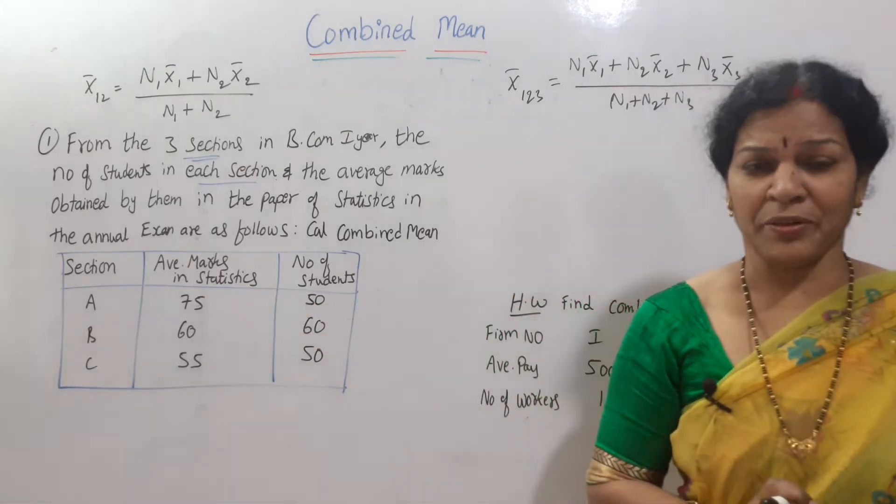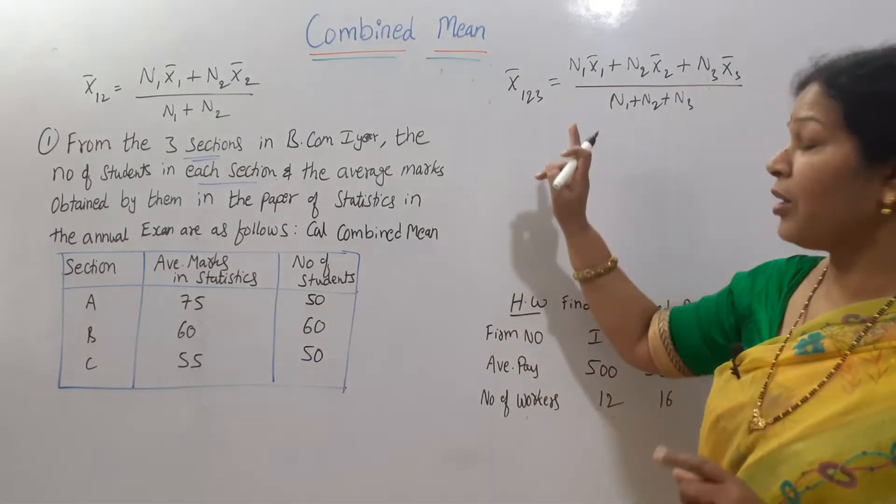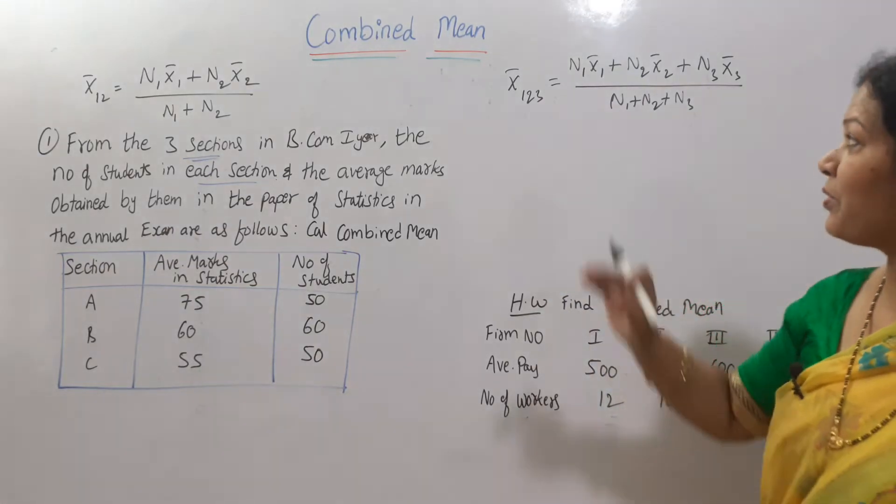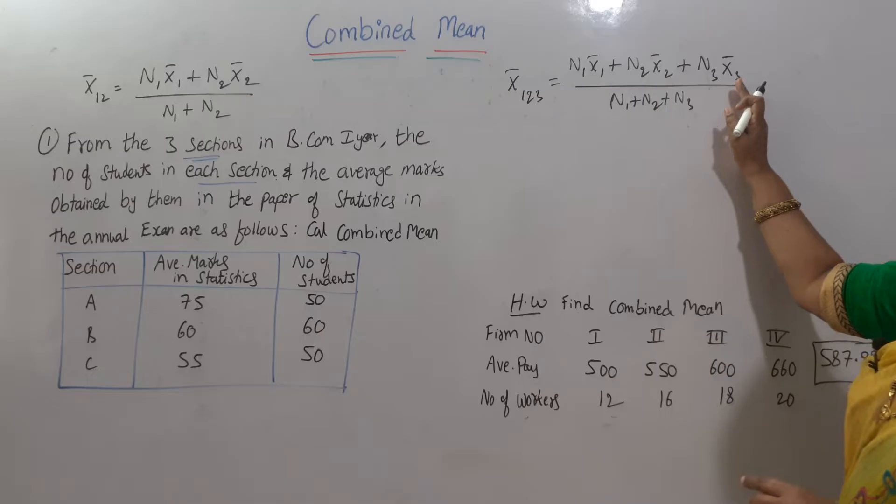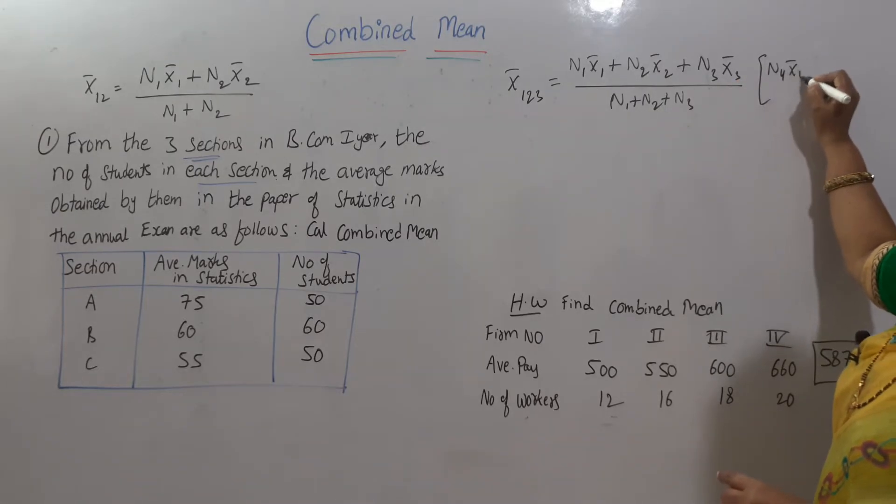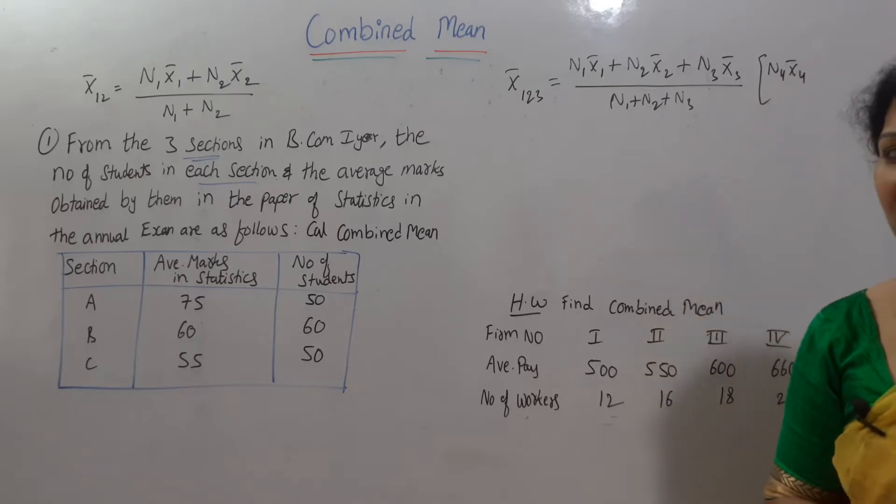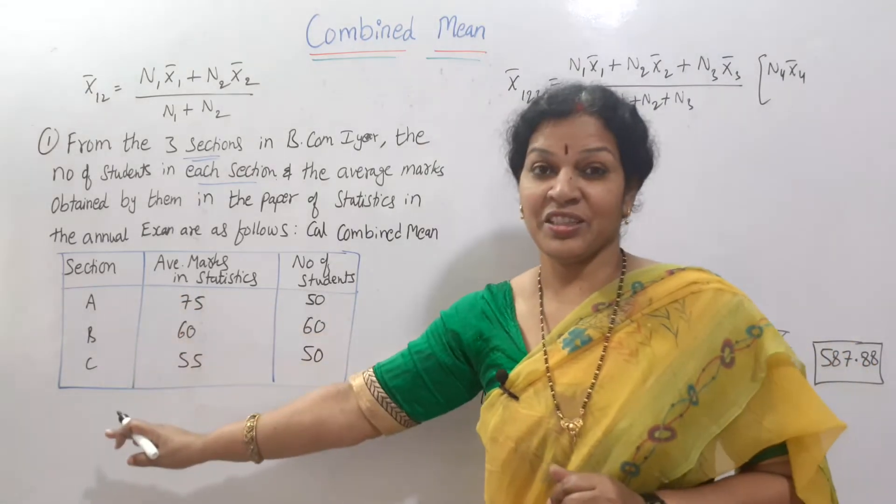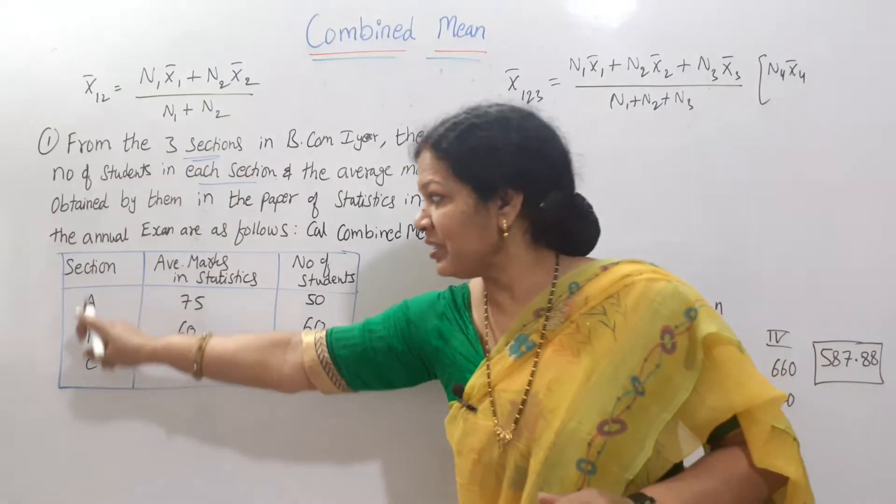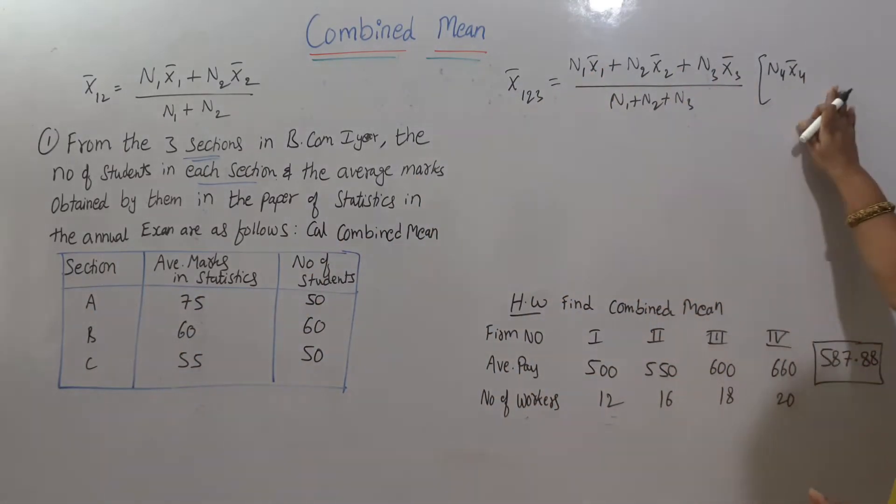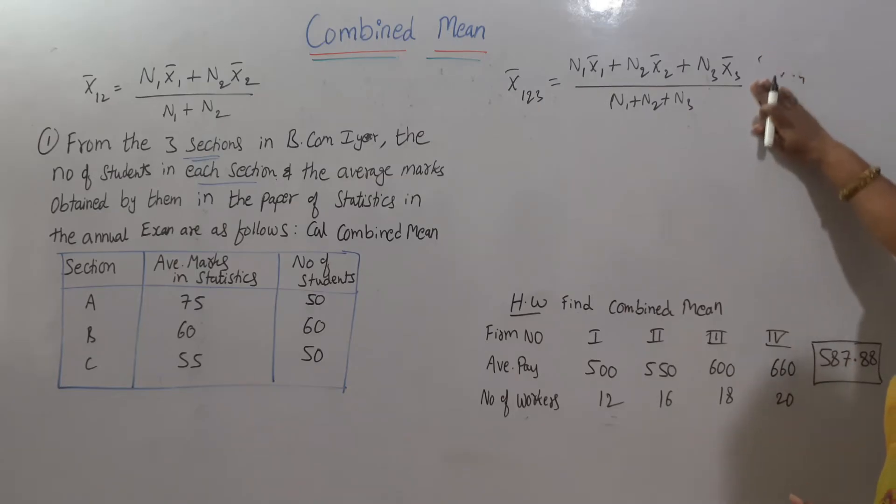Formula we have extended. If four sections are given, then the formula would be X bar 1 2 3 4. Same formula you will write up to here, then you could have extended it to n4 X bar 4 also. Here it comes to n1 plus n2 plus n3 plus n4 also. Now here 3 given, so 3 we have taken n1, n2, n3. If 4, then you could have extended this one also.